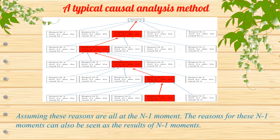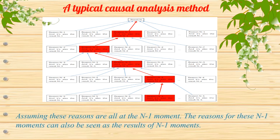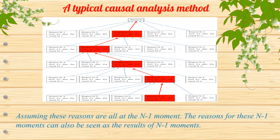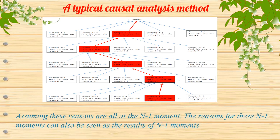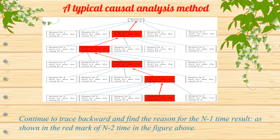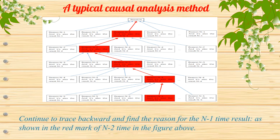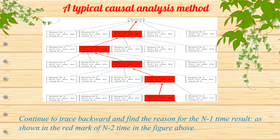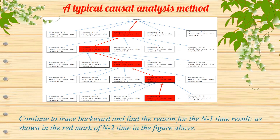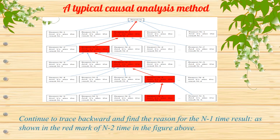Assuming these reasons are all at the n1 moment, the reasons for these n1 moments can also be seen as the results of n1 moments. Continue to trace backward and find the reason for the n1 time result, as shown in the red mark of n2 time in the figure above.